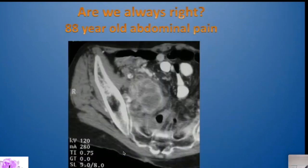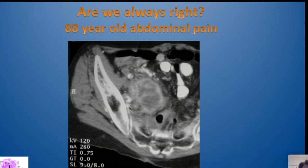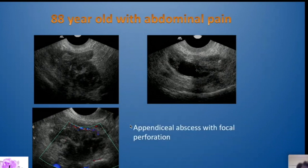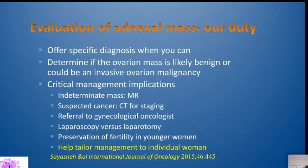Are we always right? An 80-year-old woman had a CT scan for abdominal pain showing an aggressive-looking lesion in the right adnexa with an enhancing rim. On ultrasound, we saw the same cystic and solid mass and suspected ovarian cancer. Fortunately for her, it turned out to be a ruptured appendiceal abscess with focal perforation. In retrospect, we might have picked up that there was a loop of bowel intimately related to the lesion on ultrasound.